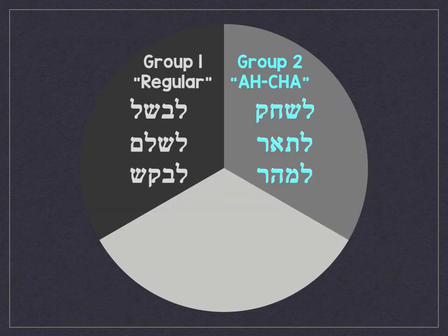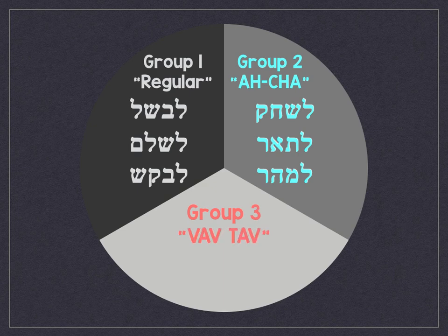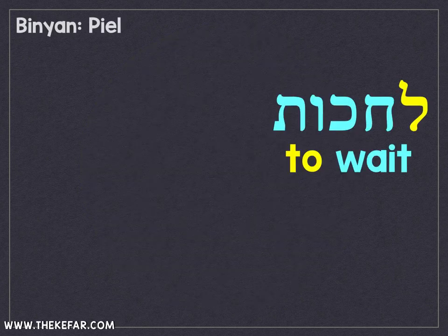Those are the two Pi'el groups we've done so far. Now we're going to add a third group — and if you've watched all of the Pa'al videos, it will be familiar to you. This is the Vav-Tav group: Pi'el verbs where the infinitive ends in a Vav-Tav. The process for finding the root will be the same as with the Pa'al Vav-Tav verbs.